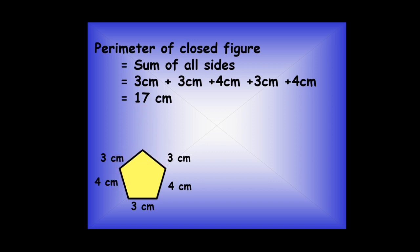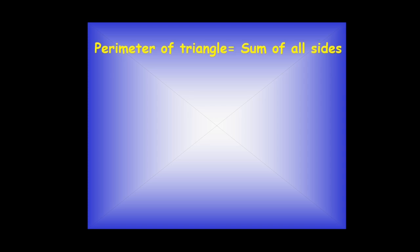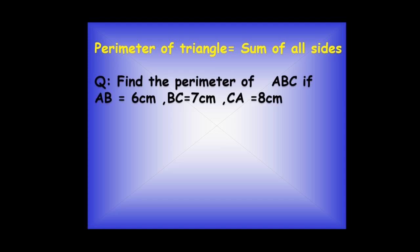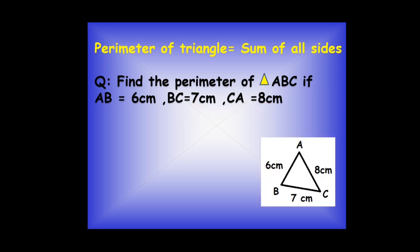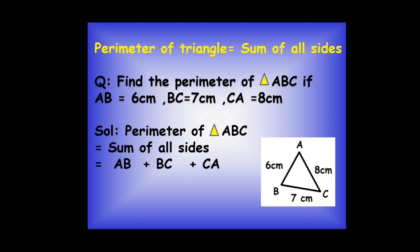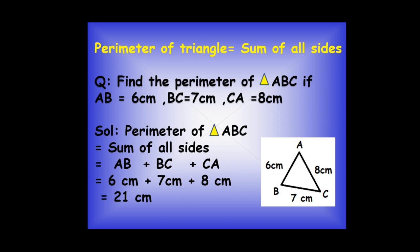Now let's talk about a triangle. The perimeter of a triangle is the sum of all its sides. Here we have to find the perimeter of triangle ABC, where side AB is 6 cm, BC is 7 cm, and CA is 8 cm. Adding AB, BC, and CA: 6 plus 7 plus 8 equals 21 centimeters. So the perimeter of this triangle is 21 centimeters.